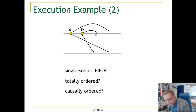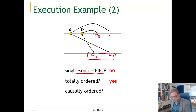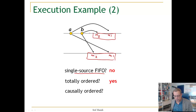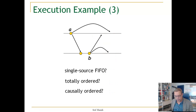Let's look at this execution. We call this M1 and this M2. Is it source FIFO order? You can see that is not the case, so the answer is no. Is it totally ordered? The answer is yes — we have these two messages in the order M2, M1, but not in FIFO order. So total order does not imply FIFO order. Is it causally ordered? The answer is no, because causal order implies FIFO order — one of the properties of causal order is FIFO order.